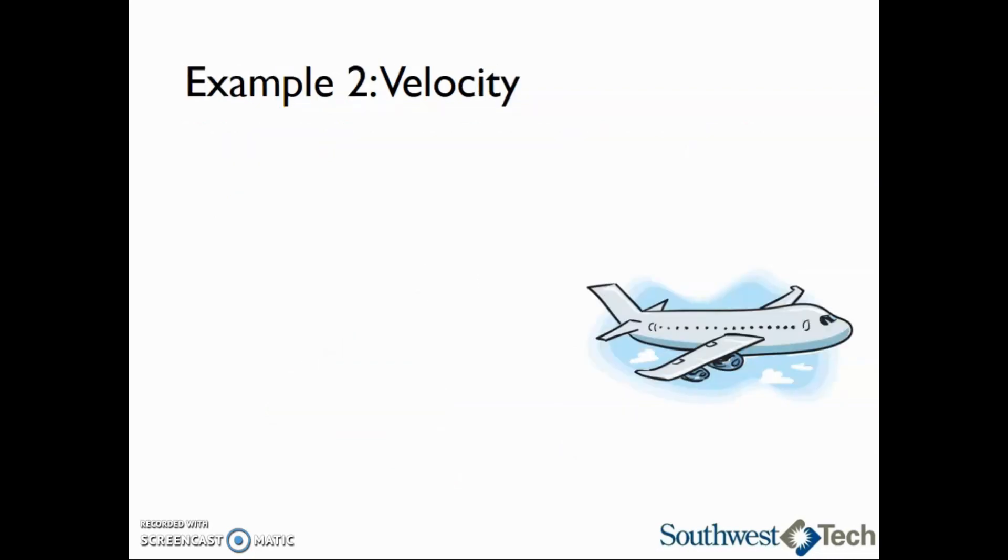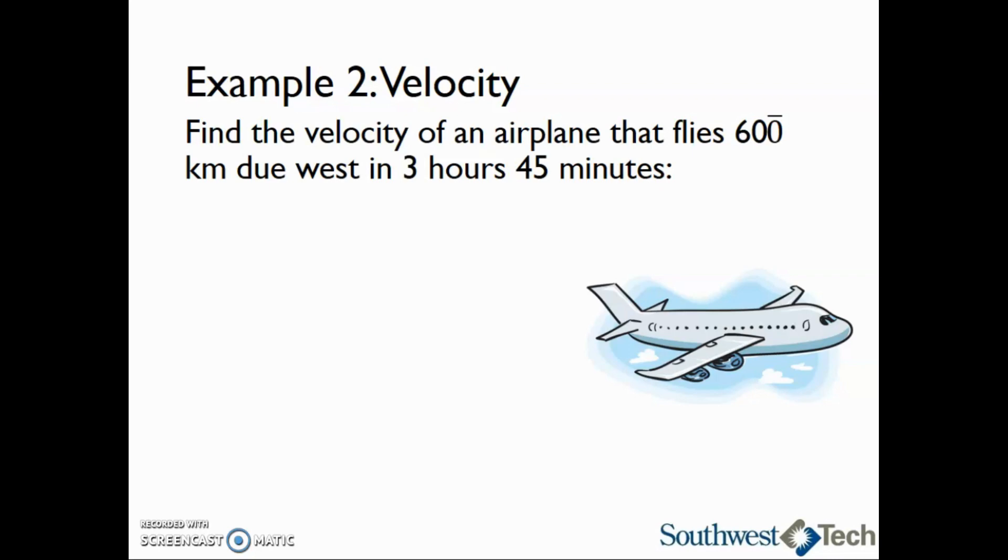Let's take a look at an example for velocity. Find the velocity of an airplane that flies 600 kilometers due west in 3 hours and 45 minutes. First, we will write down all of the information we are given, including what we are trying to find. We know that the total distance traveled is 600 kilometers. The time it takes to travel that distance t is 3 hours and 45 minutes.